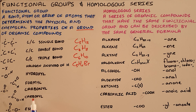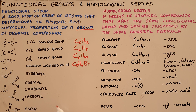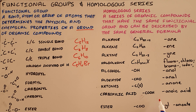Then we get the carboxyl functional group, which is a combination of the hydroxyl group and the carbonyl group, where we have a carbon double bonded to an oxygen, also single bonded to an oxygen, which is single bonded to a hydrogen. Any compound that contains this carboxyl functional group is a carboxylic acid, represented in condensed structural formula as COOH, and gets the suffix -anoic acid.